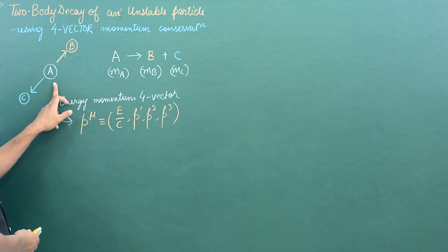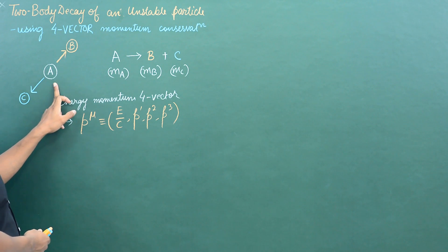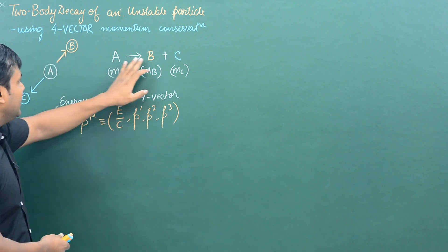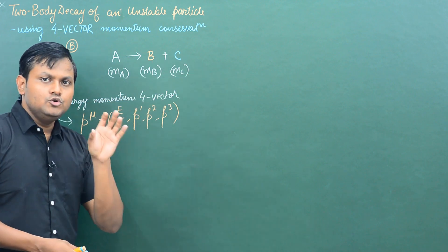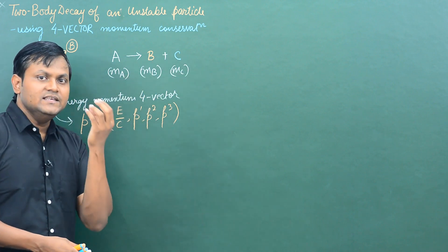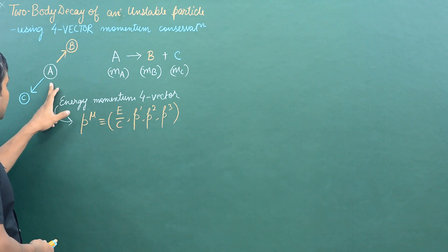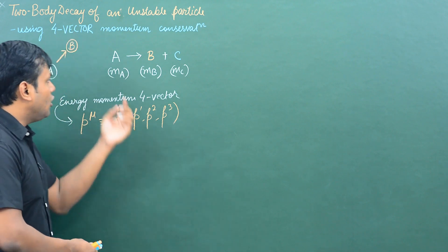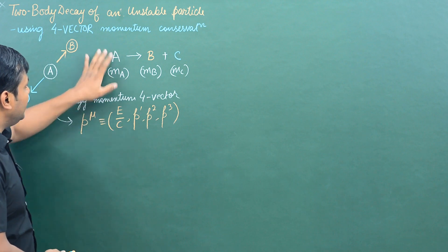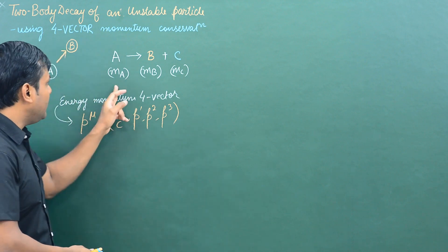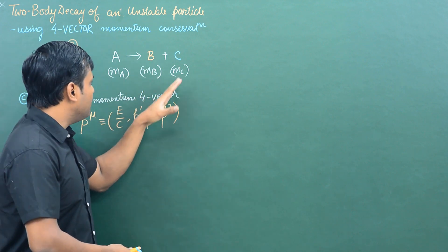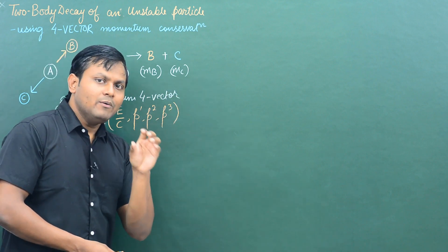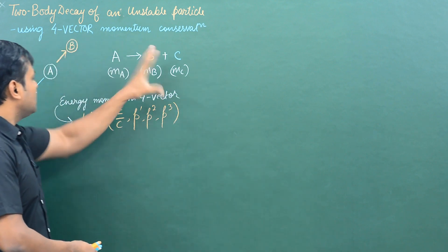Here we have a particle A that decays into two daughter particles, B and C. We are going to do the analysis in the rest frame of particle A. Particle A has rest mass MA, particle B has rest mass MB, and particle C has rest mass MC. How can we use four-vectors to study this problem?